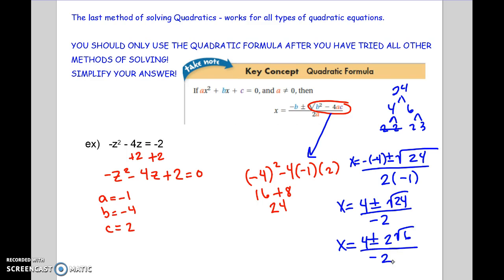So now I'm going to have two answers from this, because I have a plus or a minus here. So it's going to be x equals 4 plus 2 root 6 over negative 2. And x equals 4 minus 2 root 6 over negative 2. And then we're going to have to reduce.